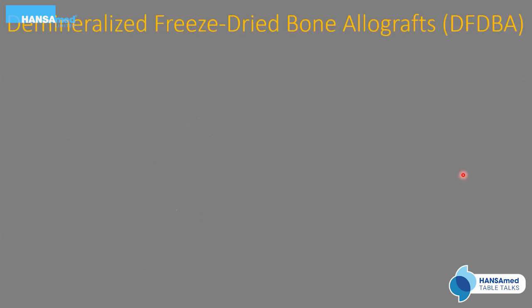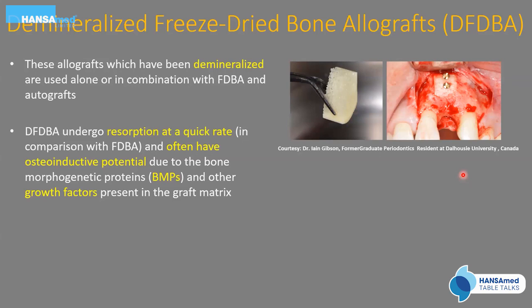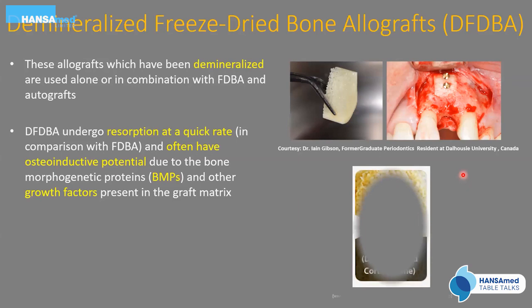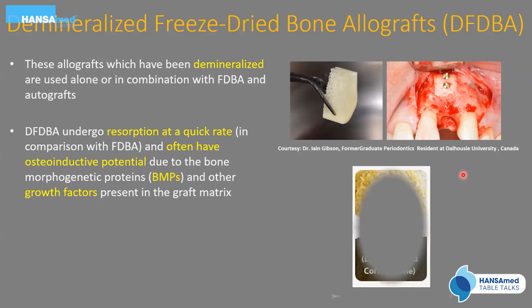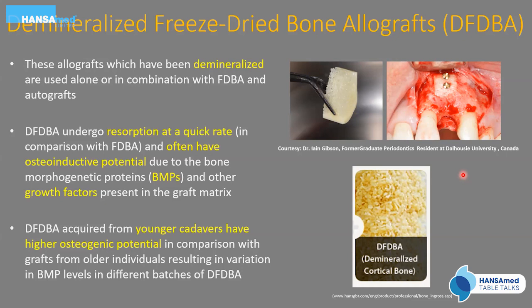DFDBA undergoes resorption at a quicker rate than FDBA and has osteoinductive potential due to BMPs and other growth factors present in its matrix. However, a limitation is that DFDBA acquired from younger cadavers has higher osteogenic potential — and there is variation between batches based on differing levels of BMPs and different DFDBA from tissue banks depending on cadaver age, which cannot be controlled by the clinician.